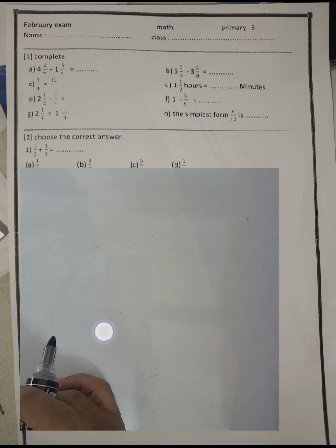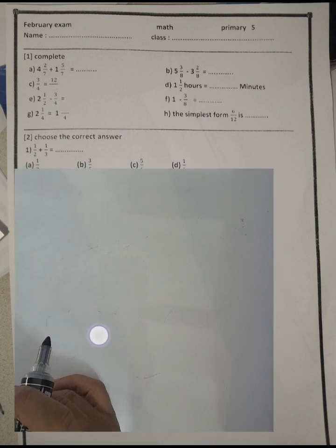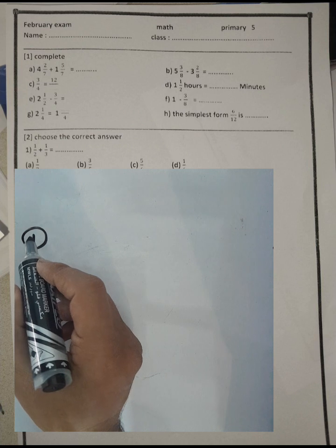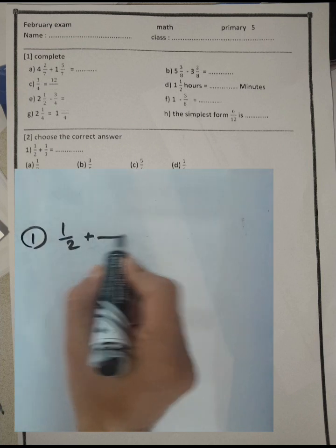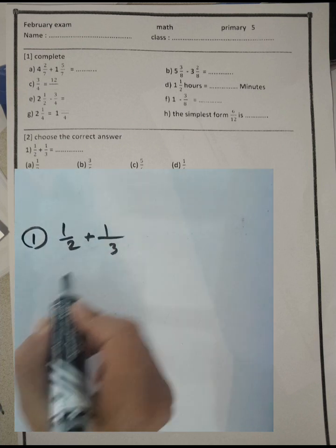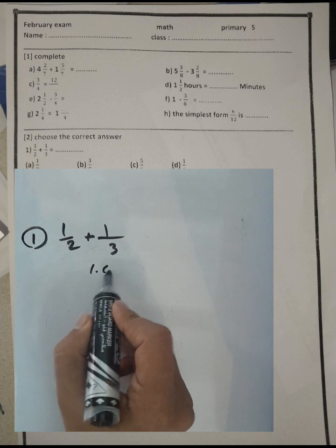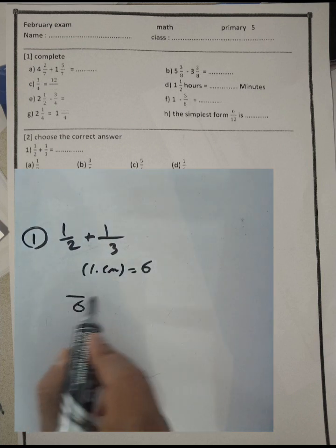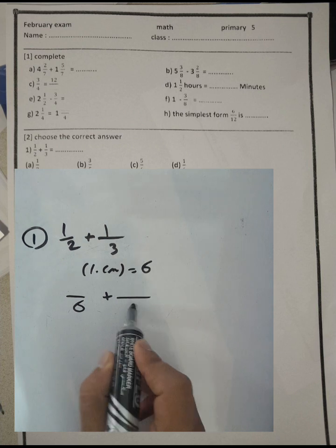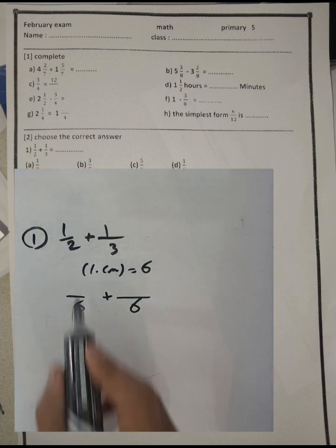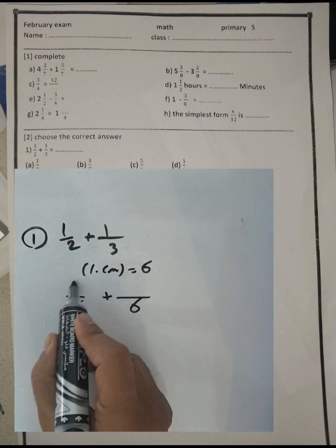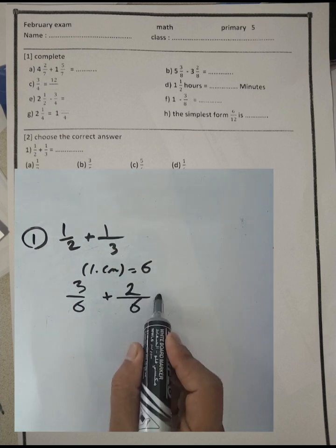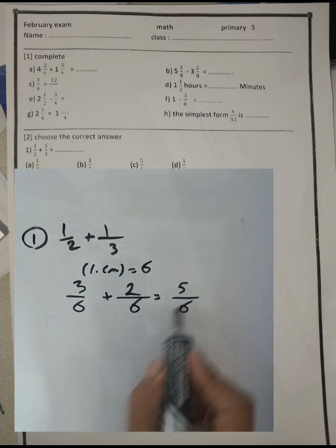Question number two, choose the correct answer. Number one: one over two plus one over three. We find the least common multiple between them, which is six. Six divided by two times one equals three, six divided by three times one equals two. Three plus two equals five, so the result will be five over six.